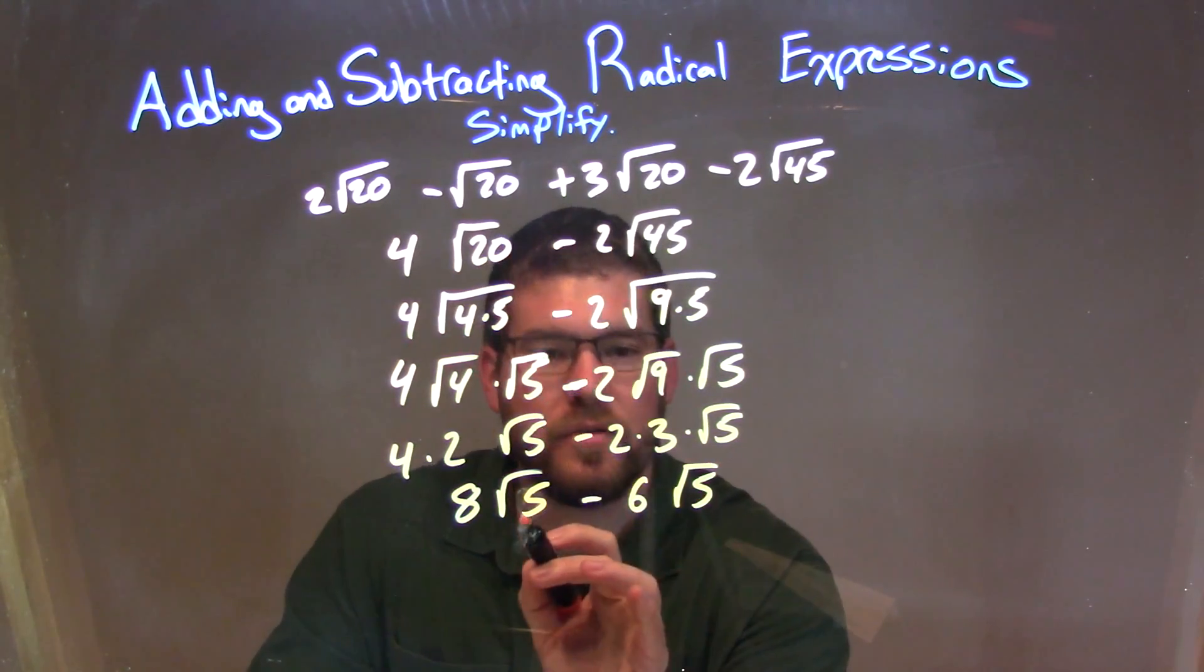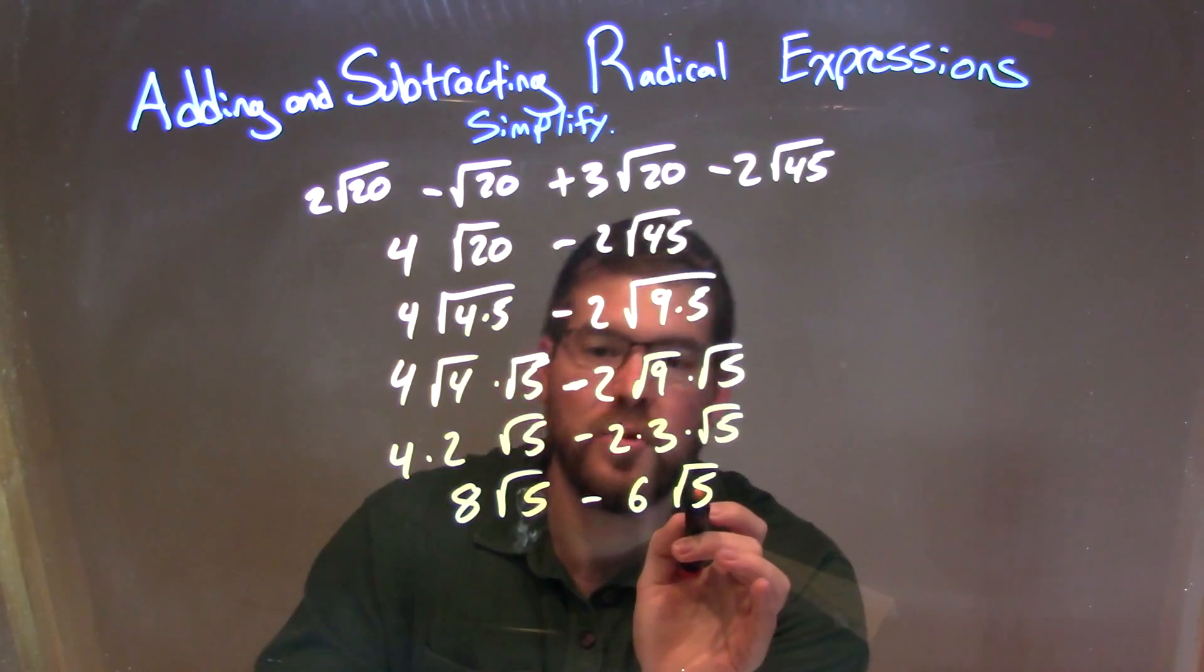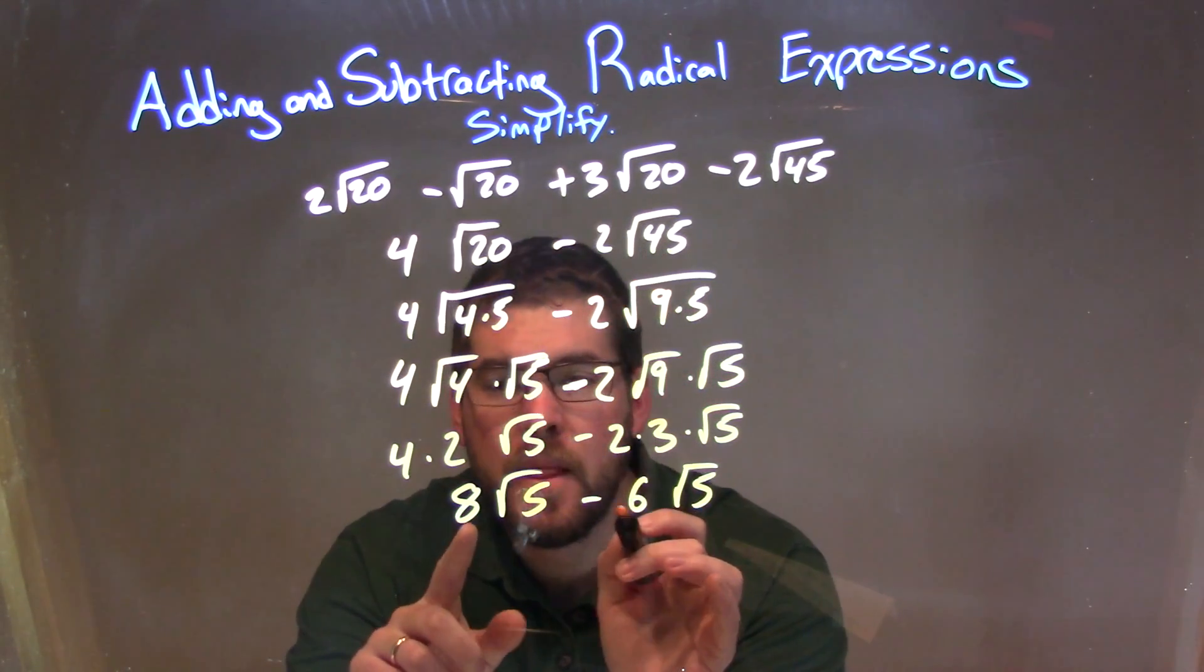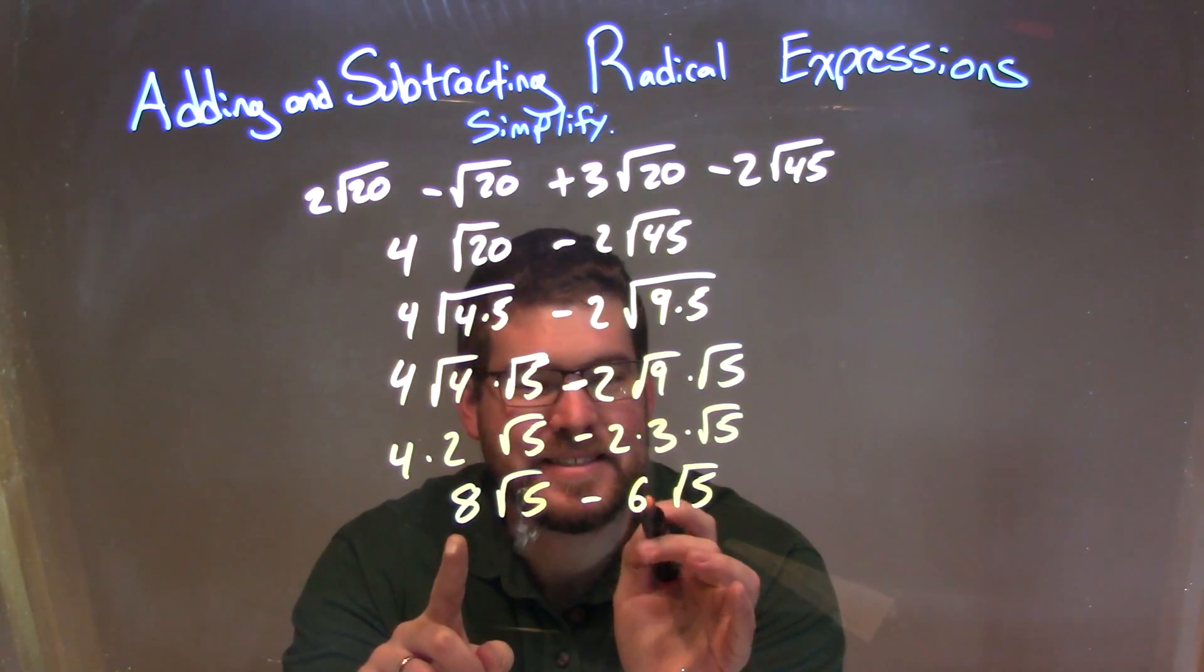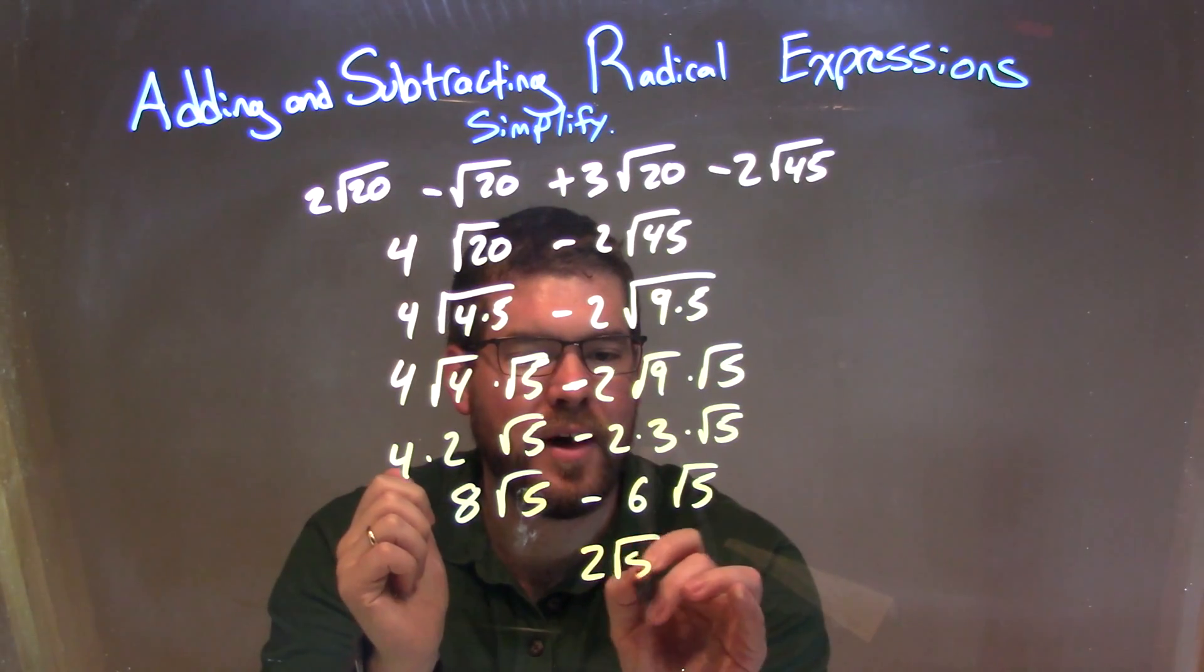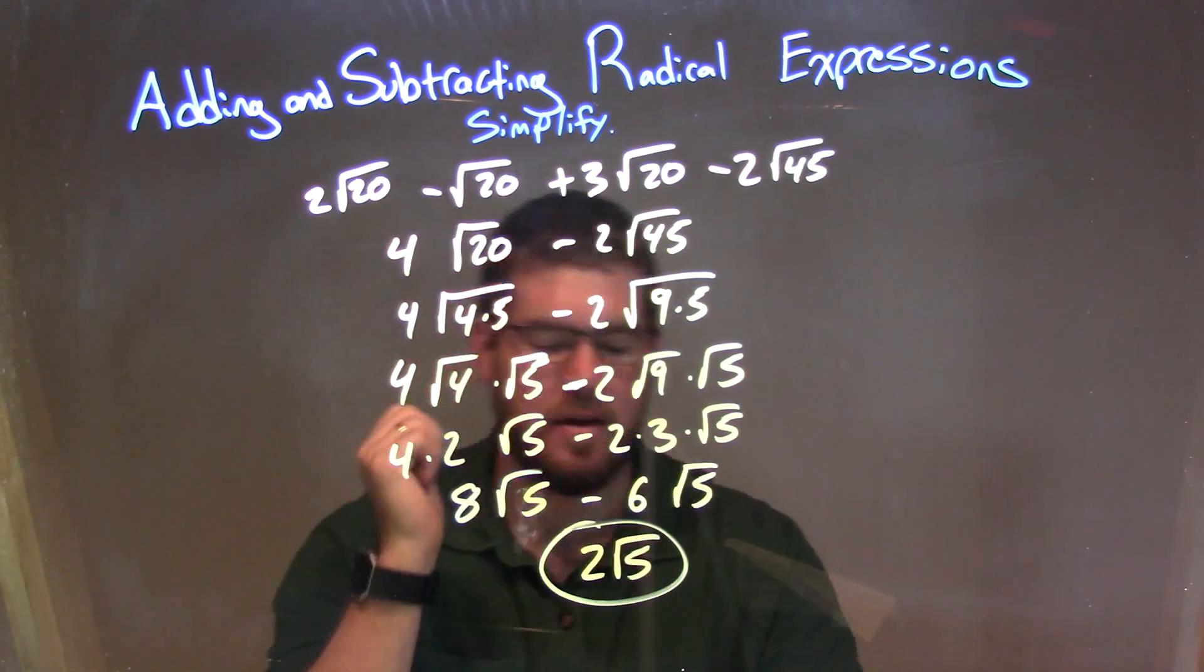Well, luckily here, we have square root of 5 and square root of 5. They're both the same, so we look at the numbers out in front. And we can combine these two: 8 minus 6 is 2, so we now have 2 square root of 5, and that is my final answer.